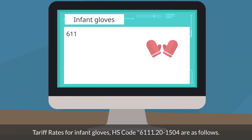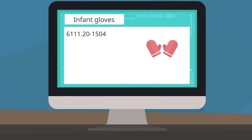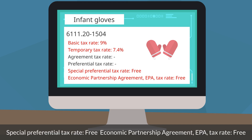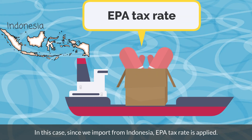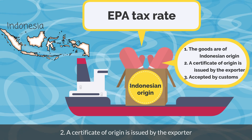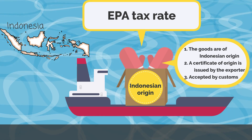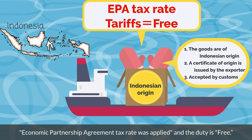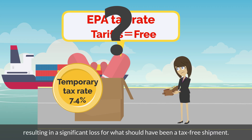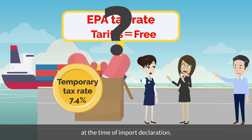Tariff rates for infant gloves with HS code 6111201504 are as follows: Basic tax rate 9%, Temporary tax rate 7.4%, Special preferential tax rate free, Economic Partnership Agreement (EPA) tax rate free. In this case, since we import from Indonesia, the EPA tax rate is applied. The key point is whether the goods are of Indonesian origin: the goods must be of Indonesian origin, a certificate of origin is issued by the exporter, and it is accepted by customs. If the above applies, the EPA tax rate is applied and the duty is free. If the importer does not know this, a temporary tax rate of 7.4% will be applied, resulting in a significant loss for what should have been a tax-free shipment. However, such cases are often pointed out by customs or forwarders at the time of import declaration.